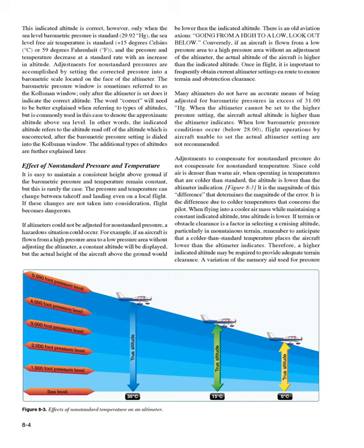Some heading indicators, referred to as horizontal situation indicators (HSI), receive a magnetic north reference from a magnetic slaving transmitter and generally need no adjustment. The magnetic slaving transmitter is called a magnetometer. The adjustment knob is used to align the heading indicator with the magnetic compass. Attitude and Heading Reference System (AHRS): electronic flight displays have replaced free-spinning gyros with solid-state laser systems capable of flight at any attitude.